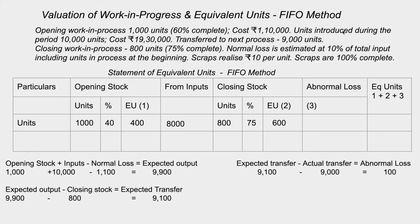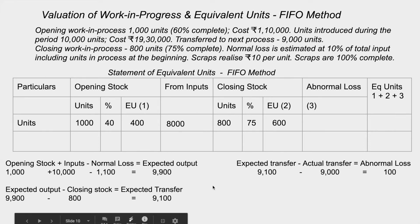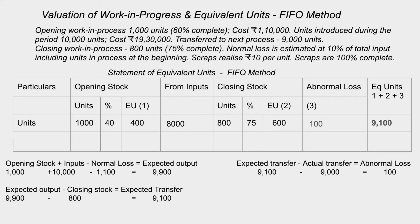Normal loss is estimated at 10% of total input. Opening stock is 1,000 units plus 10,000 introduced, giving total input of 11,000 units. So normal loss = 10% of 11,000 = 1,100. Expected output = 9,900. We have 9,000 transferred, 800 closing stock, and 100 normal loss — that leaves 120 units as abnormal loss.